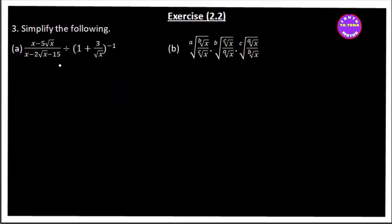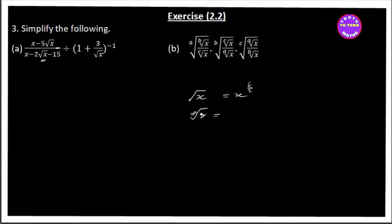For part (a), we have the expression to simplify. We identify the key terms and proceed. We are working with 2√x, and using that substitution we will simplify step by step.